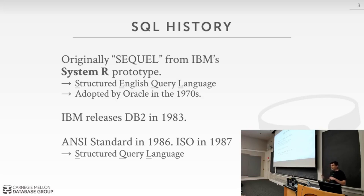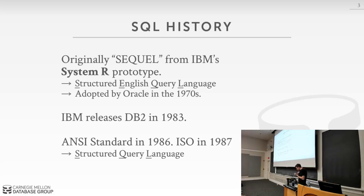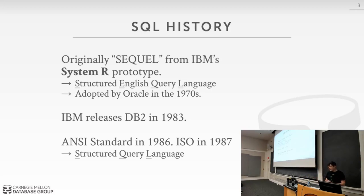IBM later got sued for trademark infringement — there was a guy in England who had the term 'sequel' for his programming language, so it was shortened to SQL. Back in the 1970s and 80s, IBM was the juggernaut — whatever IBM did became the standard. When IBM released their first commercial relational database system, DB2, they never actually released System R publicly — it was just a research prototype.